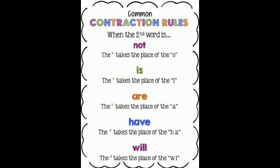Now contractions with 'will' and 'have': the 'wi' in 'will' is replaced by the apostrophe. Examples: 'I will' becomes 'I'll', 'he will' becomes 'he'll'. For 'have': 'they have' becomes 'they've' — 'ha' is replaced by apostrophe and 've' is added. 'You have' becomes 'you've'. Similarly 'had' follows the same rule.